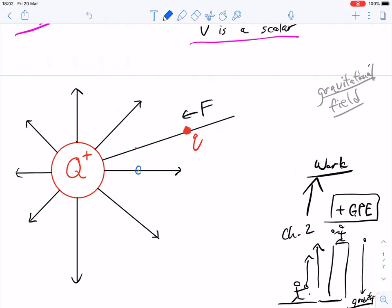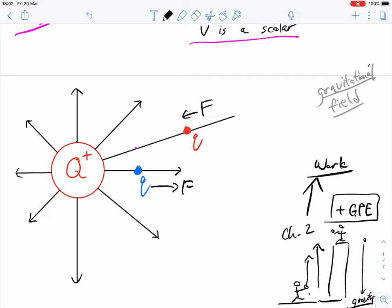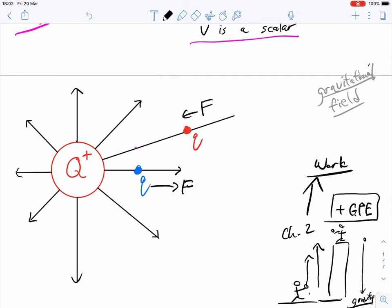This could also work for negative charges as well. Of course, if it was a negative charge, then we would move it away from the field in that direction because the natural tendency is that it's going to move in the direction of the field like that.